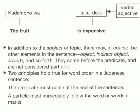Next, we have Kudamono wa Takai desu — the fruit is expensive. Our subject or topic is Kudamono wa, and our predicate is Takai desu. Here we have an example of a verbal adjective sentence.